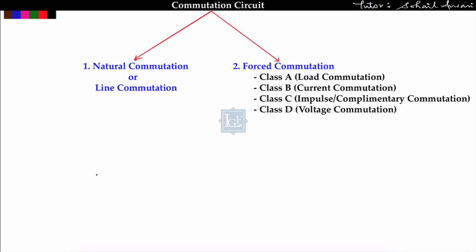In the previous lecture, lecture number 27, we covered all the previous year GATE problems based on buck-boost converter. In this way we have completed DC to DC converters. Now in this lecture, lecture number 28, we will start commutation circuits. First we will know why a commutation circuit is required.